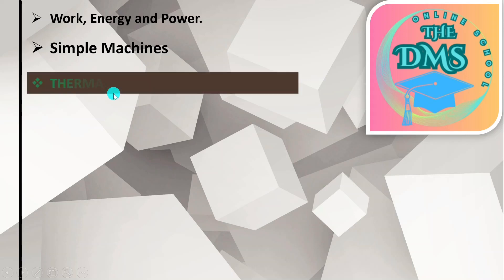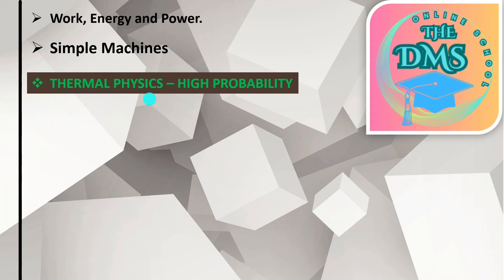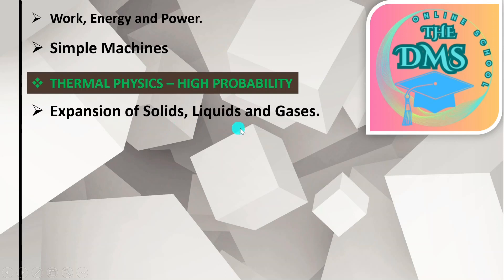Next we go to Thermophysics. It has been written in green with 'high probability' at the end, meaning it is not a key topic but has a high probability of being in the CSAS exam, considering it did not come in the GCE exam this year. The subtopics under this one are: number one, expansion of solids, liquids, and gases; and number two, heat transfer by conduction, convection, and radiation.